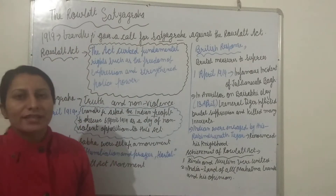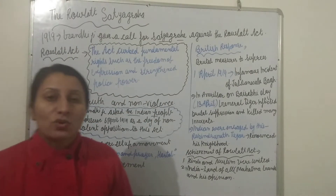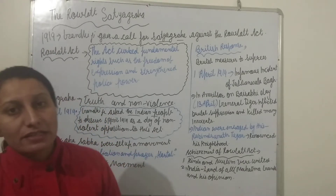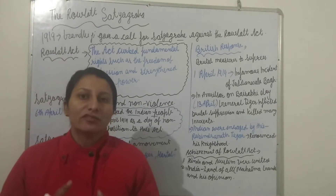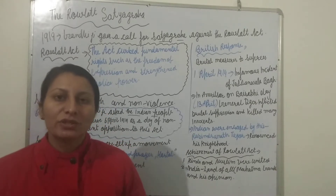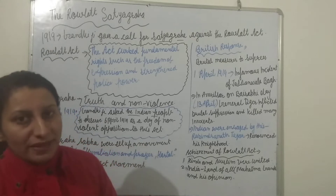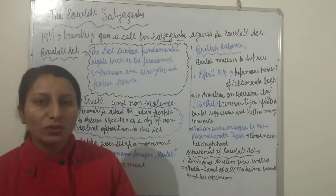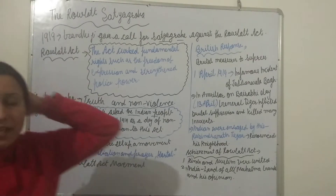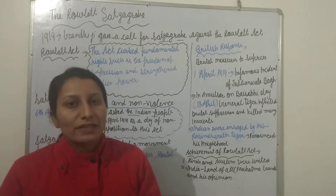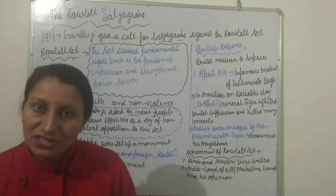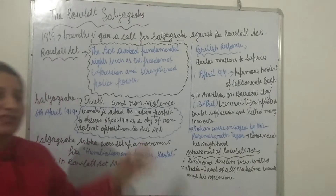Dear students, the next topic is the Rowlatt Act. The Rowlatt Act was started by the British and was directed against Indians, with Mahatma Gandhi leading the opposition. Mahatma Gandhi conducted this movement against the British using a non-violence system. We will learn what the Rowlatt Act and Rowlatt Satyagraha are, why we call it that, and what the reason behind it was.